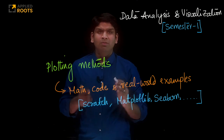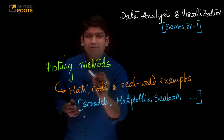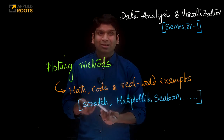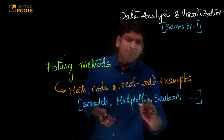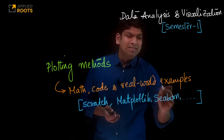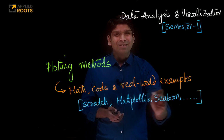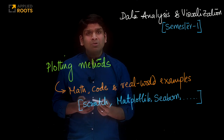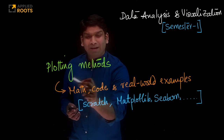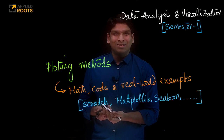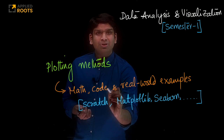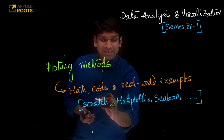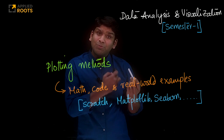When we implement something in code, we will apply two strategies. One: implement some of these plotting methods from scratch, so that you understand how that plot works internally. We will also use very popular libraries like Matplotlib, Seaborn, and Plotly. Implementing from scratch gives you a deeper understanding of the underlying mathematics and how libraries like Matplotlib implement these techniques internally.